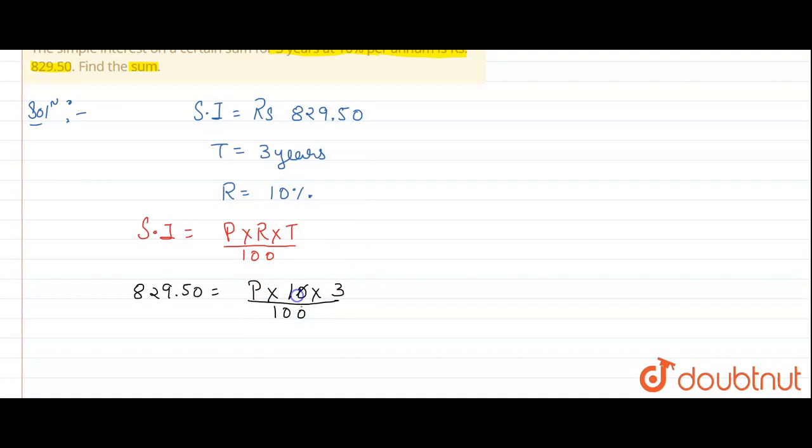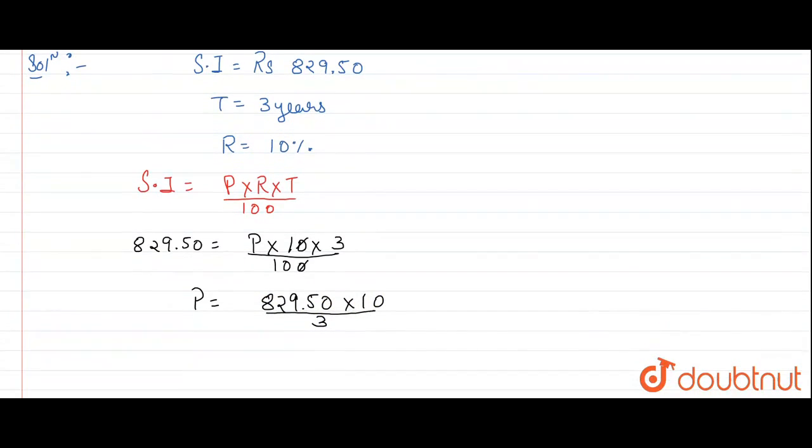From this, 10 and 100, one zero will be cancelled. Now, P is equal to 82,950 multiplied by 10 divided by 3.